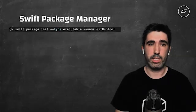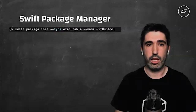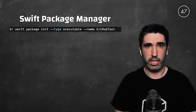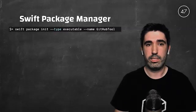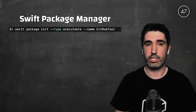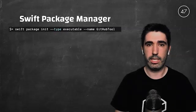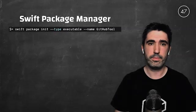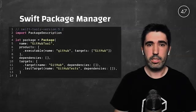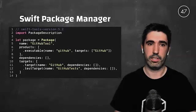We can easily create a new project using the Swift toolkit. We invoke `swift package init`, and since we are building an executable file, we pass the argument `--type executable`, then give a name to our project — in this case, GitHubTool. This will create a set of files with a project structure that is all we need to get started.